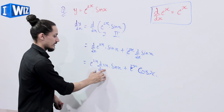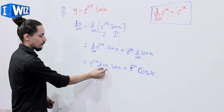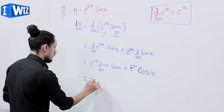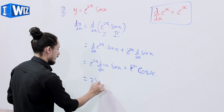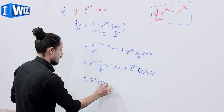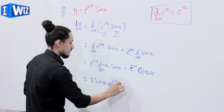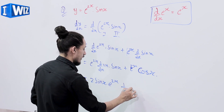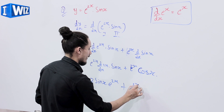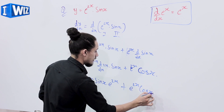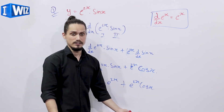The derivative of 2x is 2, so we get 2 sin x times e^(2x) plus e^(2x) times cos x, and hence the result.